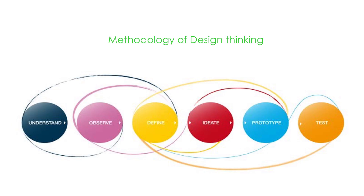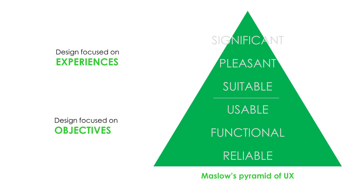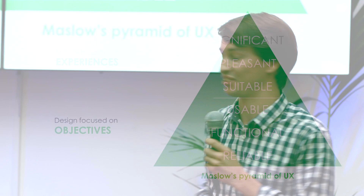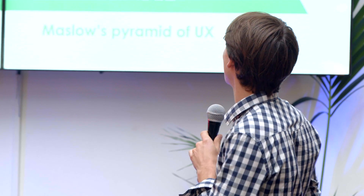Those are the six steps to follow: understand, observe, define, and then the more practical steps — ideate, prototype, and test. With this design thinking approach, I hope you can reach all these specifications: reliable, functional, usable, suitable, pleasant, and significant. Thank you.